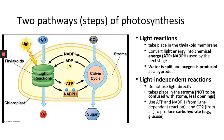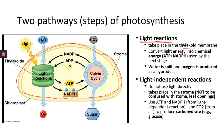Step one, the light reactions, take place in the thylakoid membrane. This whole structure here is one chloroplast — the cell organelle that photosynthesize. Inside the chloroplast, there are stacked disc structures called thylakoids — the green structures. The thylakoids are membrane-bound structures, and the light reactions take place in the membrane of the thylakoid.